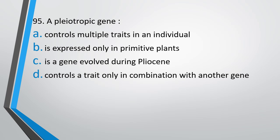Question number 95. A pleiotropic gene: controls multiple traits in an individual; is expressed only in primitive plants; is a gene evolved during the Pliocene; or controls a trait only in combination with another gene. The correct answer is option A — a pleiotropic gene controls multiple traits in an individual.